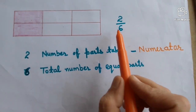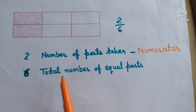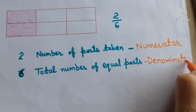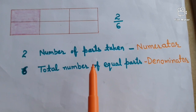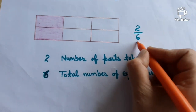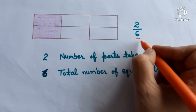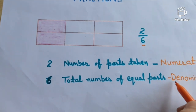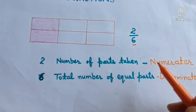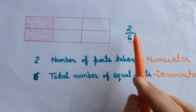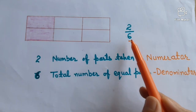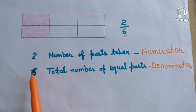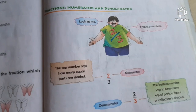The number on the bottom shows the total number of parts, so it is called denominator. Denominator is six here. You can remember: 'D' for down — the number written down is called denominator. And the top is the north side, so 'N' for north — the number on top is called numerator.